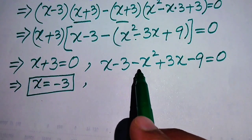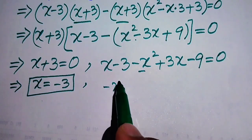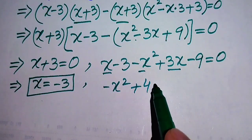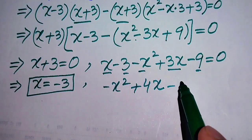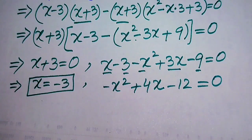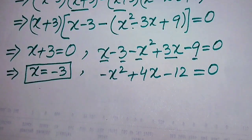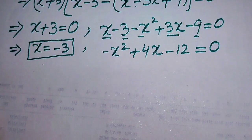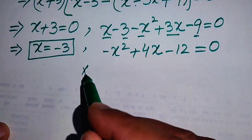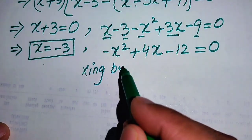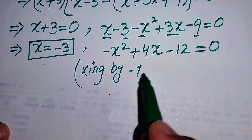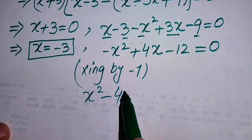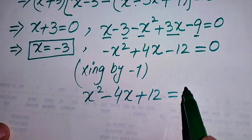For Case 2, we simplify the bracket. We have minus x squared plus x plus 3x minus 3 minus 9 = 0, which simplifies to minus x squared plus 4x minus 12 = 0. This is a quadratic but not in standard form, so we multiply both sides by minus 1, giving x squared minus 4x plus 12 = 0.